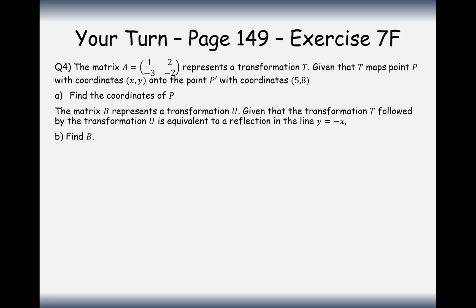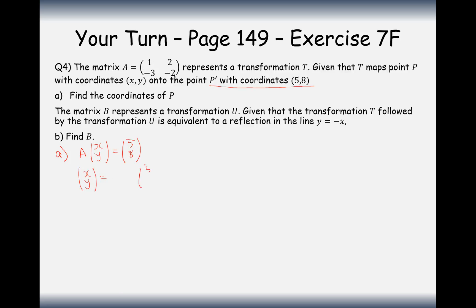Your turn — pause the video and try this question. Matrix A is [1, 2; -3, -2] and represents transformation T. Given that T maps point P with coordinates (X, Y) onto the point P' with coordinates (5, 8) — the image coordinate — find the original coordinates. So we have matrix A times (X, Y) equals (5, 8). Therefore (X, Y) equals the inverse of this matrix times (5, 8).